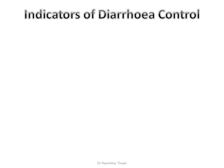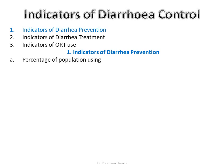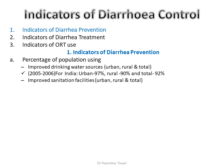Indicators of diarrhea control help us assess whether the strategies and measures we are adopting are adequate. These indicators cover three aspects: indicators of diarrhea prevention, indicators of diarrhea treatment, and indicators of oral rehydration therapy use. Prevention indicators include the percentage of population with access to improved drinking water sources and improved sanitation facilities — each measured for urban areas, rural areas, and overall in the country.